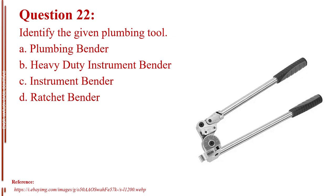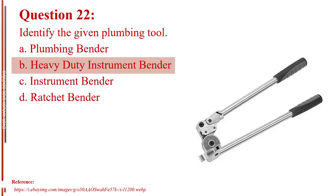Question number twenty-two. Identify the given plumbing tool. Letter A, plumbing bender. Letter B, heavy duty instrument bender. Letter C, instrument bender. Letter D, ratchet bender. The answer is Letter B, heavy duty instrument bender.